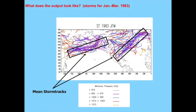Here's an example of what the output looks like. This is from reanalysis — one of my first results, going back to my 2006 paper. This shows one storm track for January through March 1983. Different colors represent different intensities; the purple dashed lines are the deeper intensity storms. I boxed over the two main storm tracks — one over the North Pacific, one from the Gulf of Mexico to off the East Coast.